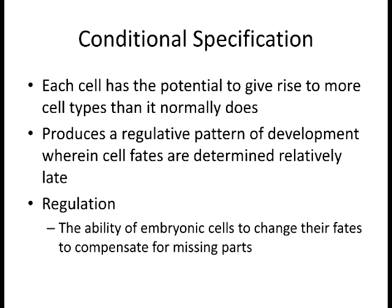Vertebrates—including you and I—are under conditional specification, where the cells' location and interaction with one another does matter. In the initial stages, we don't have things sequestered in our cytoplasm that tell the cell what to become. In fact, in the first few stages, even the inner cell mass has the potential to become every cell in an organism, which is why monozygotic twins can occur when the inner cell mass splits. Early on, cells are not specified at all.